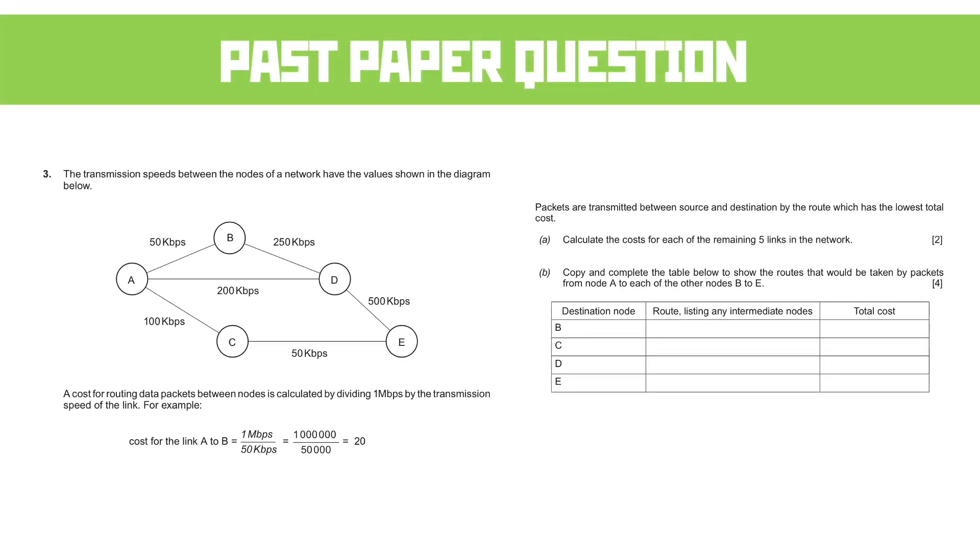The past paper questions now, and this is the one that we've seen most recently, and there's two parts to it. The first part, really, is to calculate the cost of the remaining links in the network. It gives us an example of how to do that, and of course, that is the bandwidth calculation that we looked at earlier in the activities.